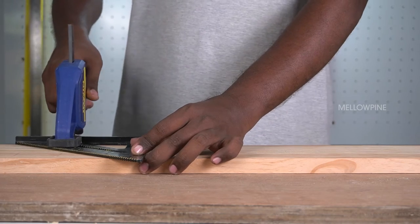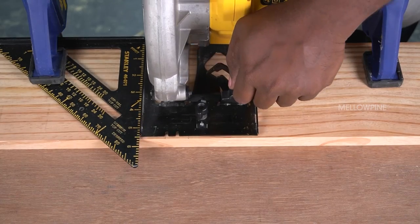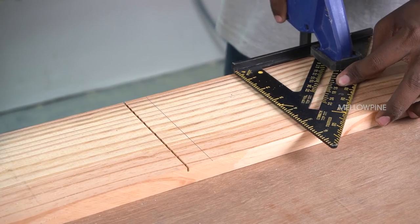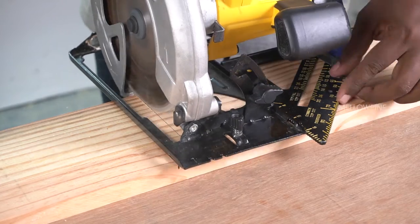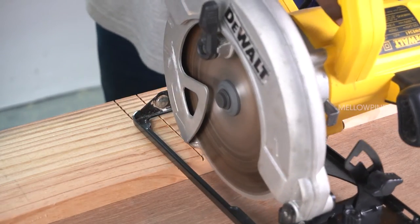Clamp the speed square in place and make the first cut inside the groove boundary. Set the speed square on the other side and make a cut along the other groove boundary as well.